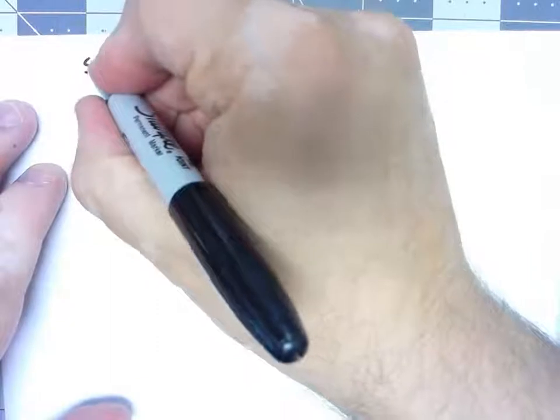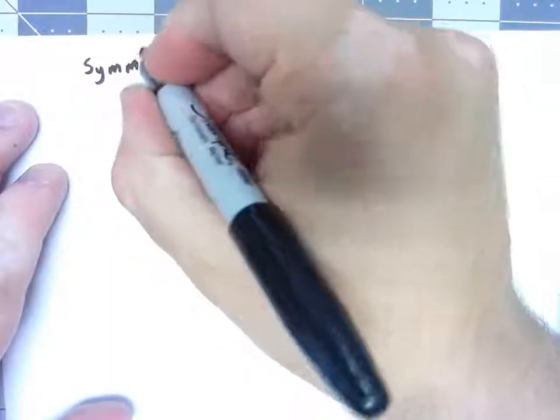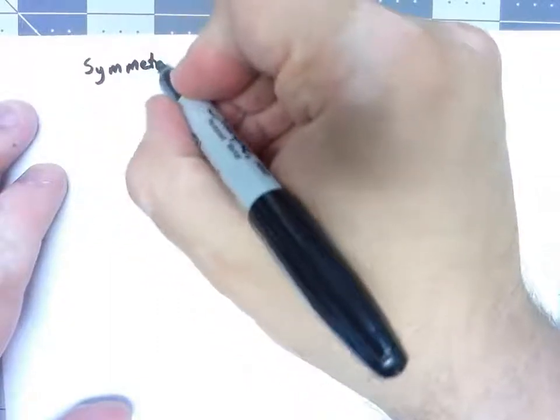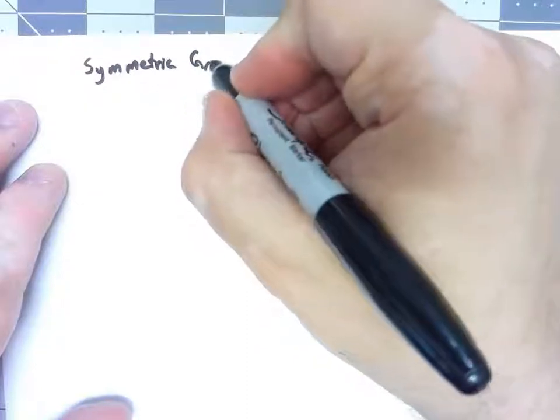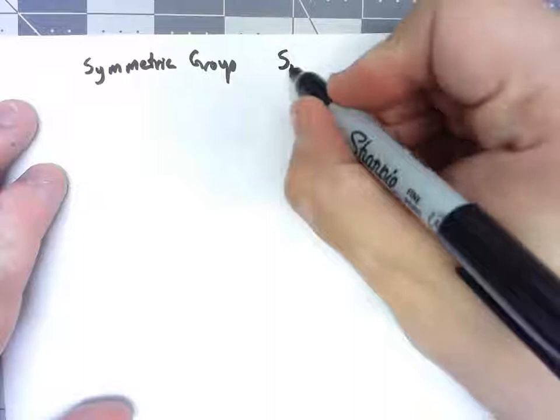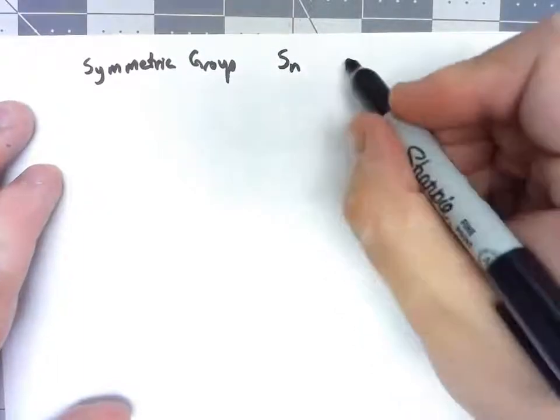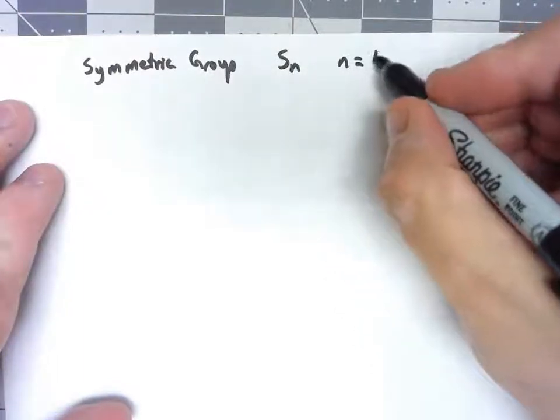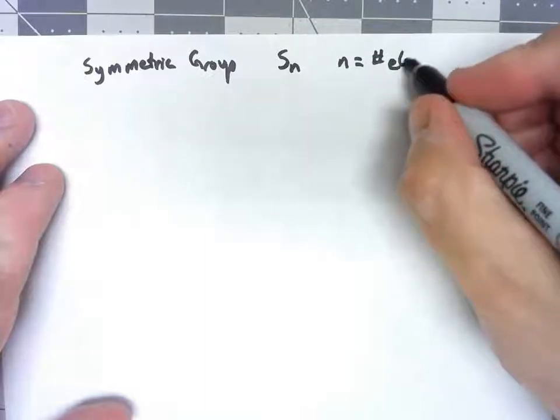An important permutation group is what we call the symmetric group. We call it Sn, where n is the number of elements being permuted.